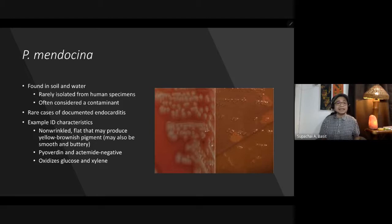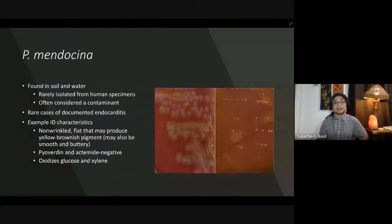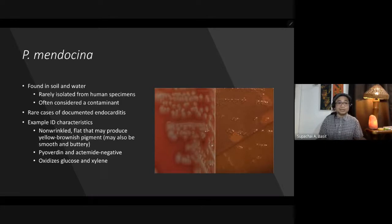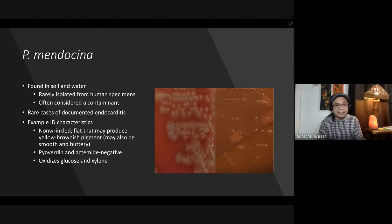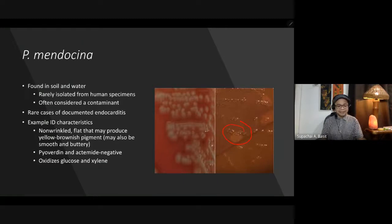Pseudomonas mendocina is found in soil and water and is rarely isolated from human specimens. When isolated, it often indicates contamination rather than true infection, though there are rare cases of documented endocarditis. Colonies are non-wrinkled but flat, and may produce yellow or brown pigments. They are pyoverdine and acetamide negative, and can only oxidize glucose and xylose.